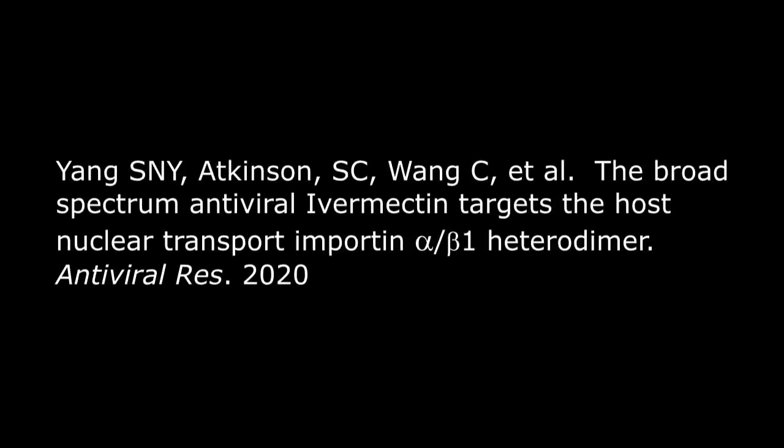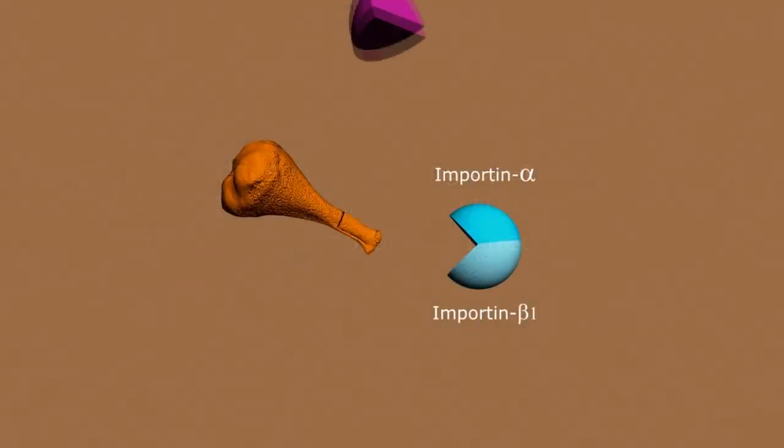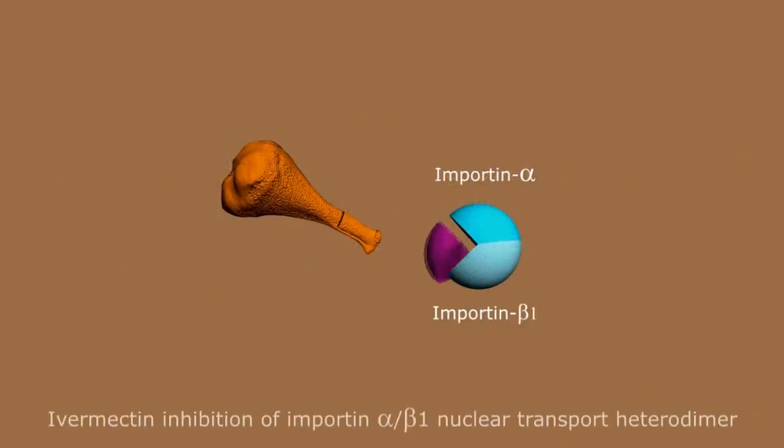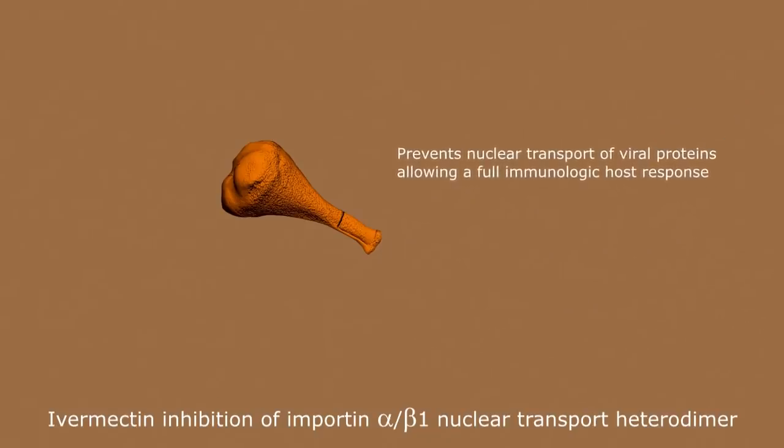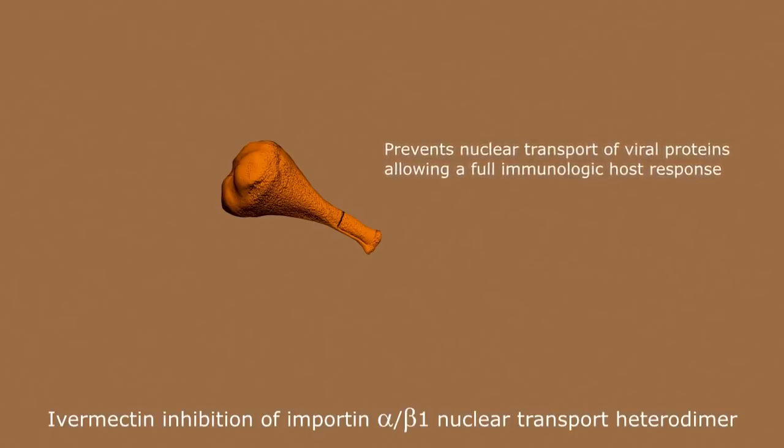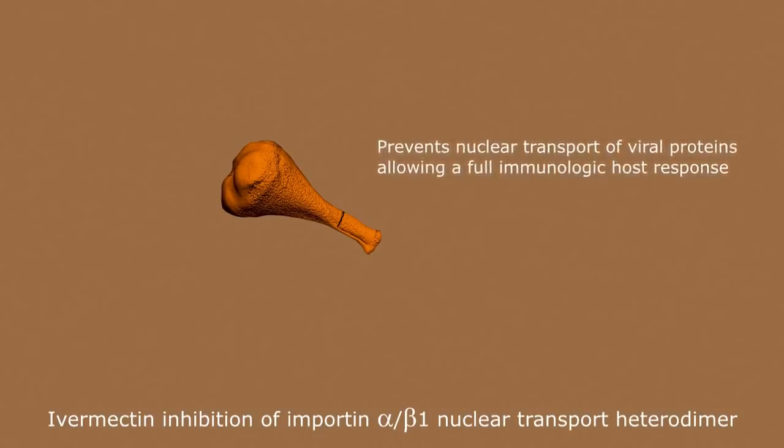In May of 2020, Yang et al. published an article in the journal Antiviral Research demonstrating ivermectin's possible ability to inhibit the importin alpha-beta-1 nuclear transport molecule and thus prevent nuclear transport of viral proteins into the host nucleus, eliminating immune suppression and allowing a full immunologic host response.